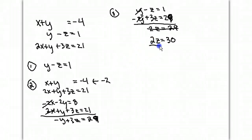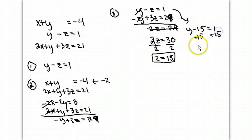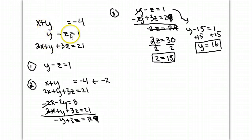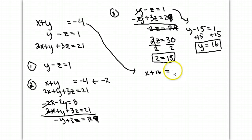Dividing both sides by 2 gives z equals 15. Now to get y, I plug z into the first equation: y minus 15 equals 1. Add 15 to both sides: y equals 16. Now all I need is x. Since x is not in the second equation, I'll use the first, which is missing z, making it easier. Plugging in y equals 16: x plus 16 equals negative 4. Subtracting 16 from both sides: x equals negative 20.